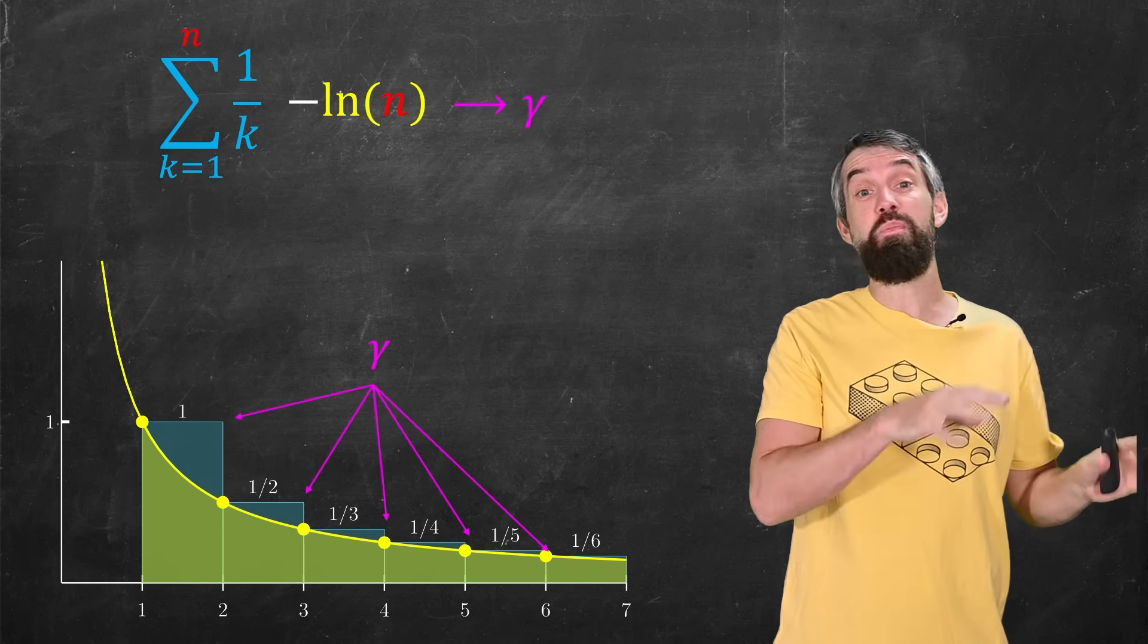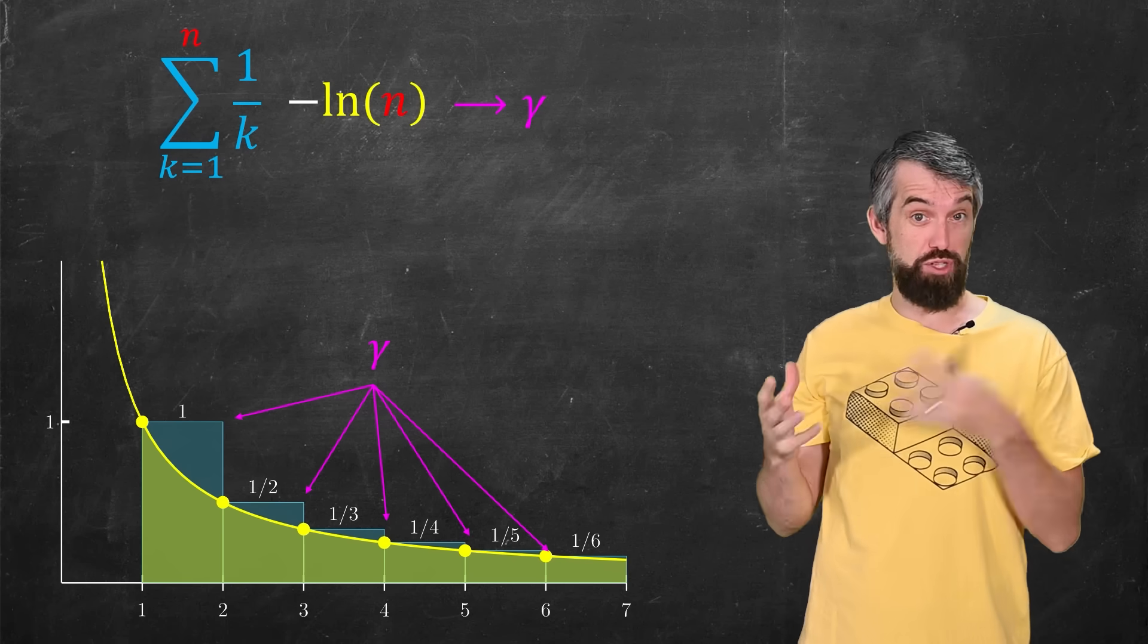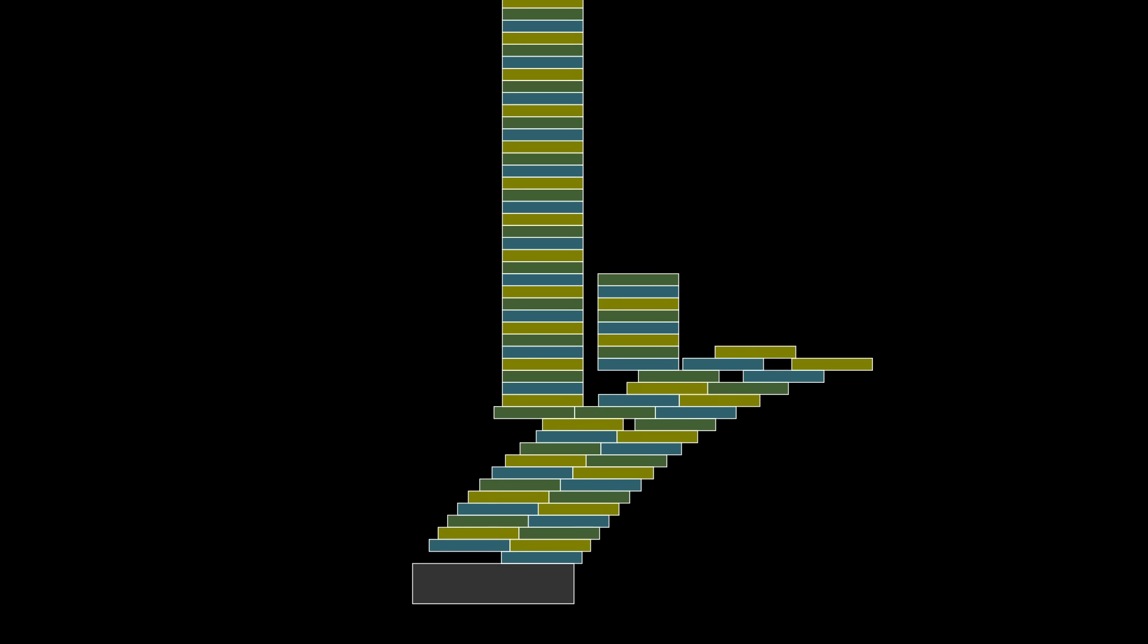So we saw that Spinal Stacks beat out the Tower of Lyra for small values of n. Do they beat it out for large values of n? No.